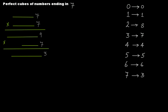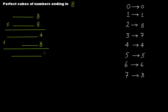If your number ends in 8: 8 times 8 is 64 — 6 carried over, 4 at units place. Then 8 times 4 is 32 — 3 carried over, 2 at units place. So if your number ends in 8, the perfect cube will end in 2.